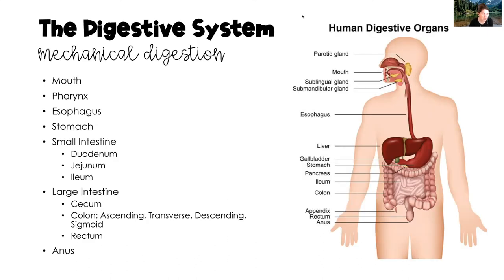We have two types of digestion: mechanical digestion and chemical digestion. Mechanical digestion involves all the body parts that actually move food from the mouth all the way to the anus.